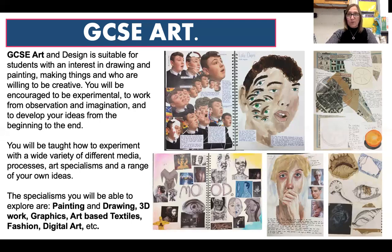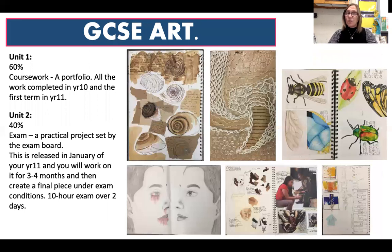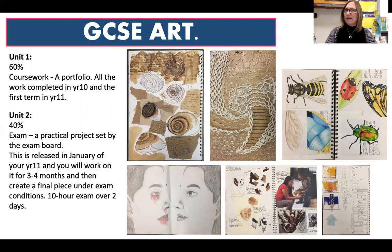The layout of the course is that you will do 60% coursework. That's a coursework portfolio which is completed over four terms — three of the year 10 terms and one in year 11. Then in year 11, just after Christmas, you get given your exam paper where you have something like between 15 and 16 different starting points, and you just choose one of them and use that as a springboard to explore and develop your own ideas.